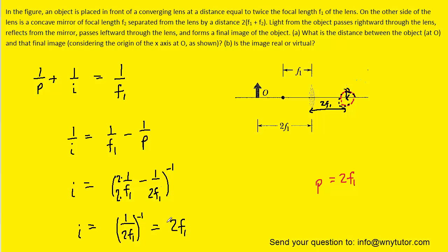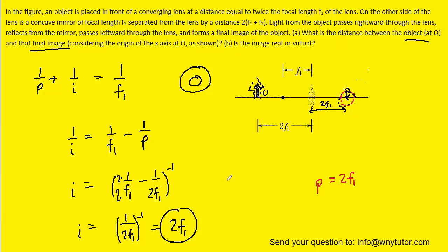The positive result means the final image is located on the opposite side of the converging lens from the object. The image is located at 2F1, which places it right back at the same location as the original object. So when Part A asks for the distance between the object and the final image, the answer is zero — the image and object are superimposed on top of each other. Since the image distance was positive, the image is real, and both parts of the question are answered.